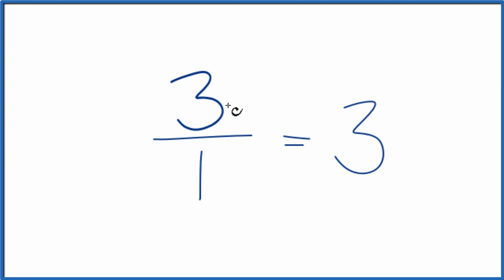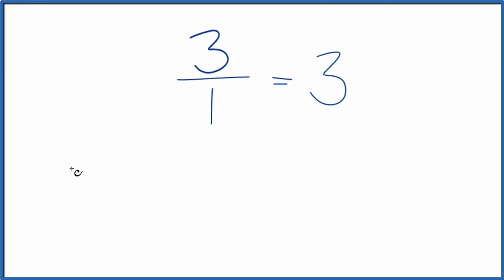Let's find three equivalent fractions here to 3 over 1. We could just double the numerator and denominator, multiply each by 2. 2 times 3, that's 6, 2 times 1 is 2, and 6 divided by 2 equals 3. So this is an equivalent fraction to both 3 and 3 over 1.